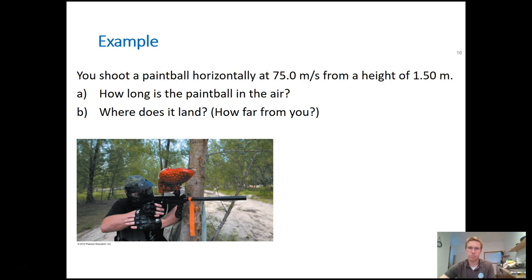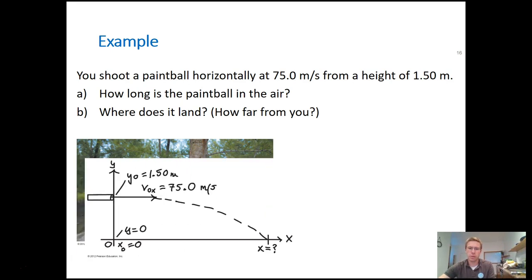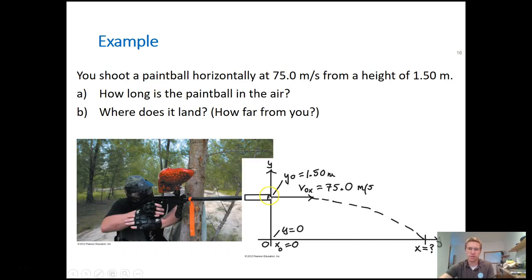It doesn't need to be pretty, but you need some sort of picture to visualize what's going on. The paintball starts with a completely x-direction velocity of 75 meters per second. Its initial velocity in the y is 0, so its y-motion is the same as if you just dropped it straight down — but it's also moving in the x direction. Its initial height is 1.5 meters, initial x position is 0, and its final y position is 0 because it hits the ground.